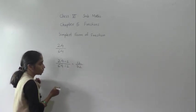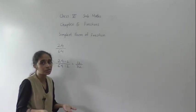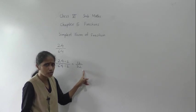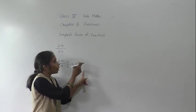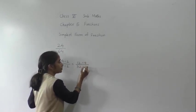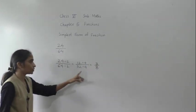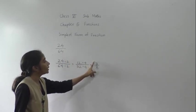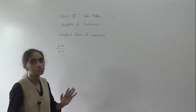Again, 12 upon 32 — both numbers come in the 4 table, so we can divide by 4. 4 threes are 12 and 4 eights are 32. So the simplest form of 24 upon 64 is 3 upon 8. You can use any method — whichever is easy for you.